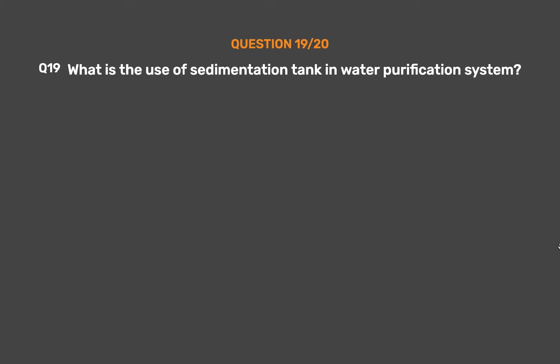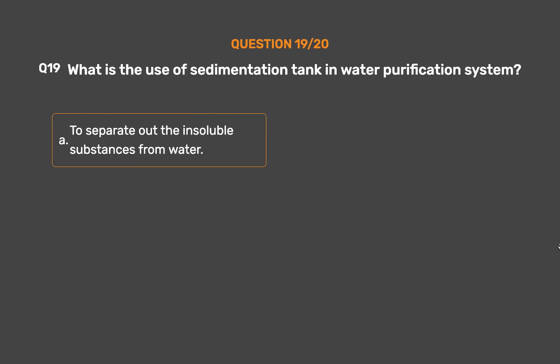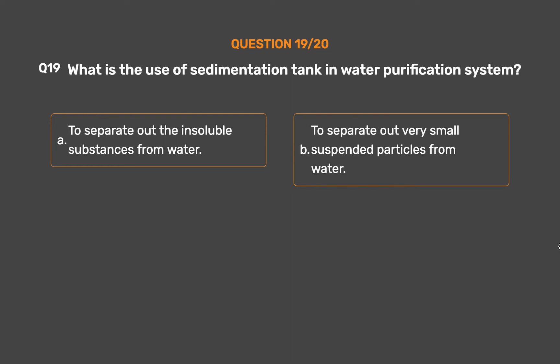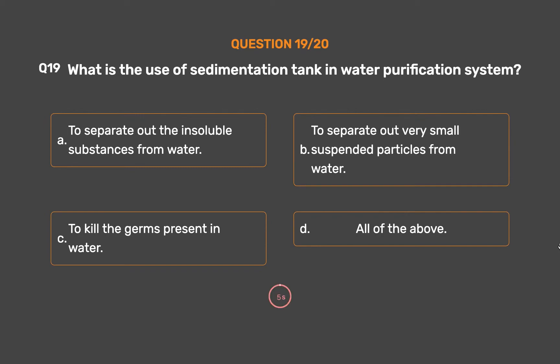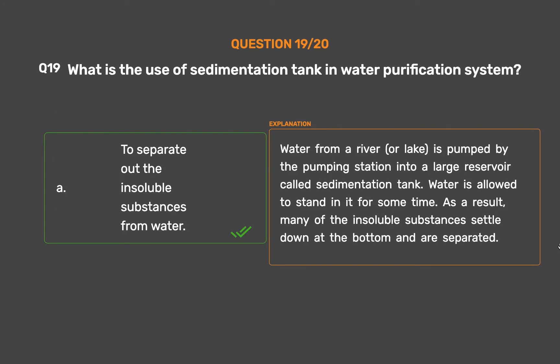Question number 19. What is the use of a sedimentation tank in a water purification system? Option A: To separate out the insoluble substances from water. Option B: To separate out very small suspended particles from water. Option C: To kill the germs present in water. Option D: All of the above. The correct answer is Option A. Water from a river or lake is pumped into a large reservoir called a sedimentation tank, where insoluble substances settle at the bottom and are separated.